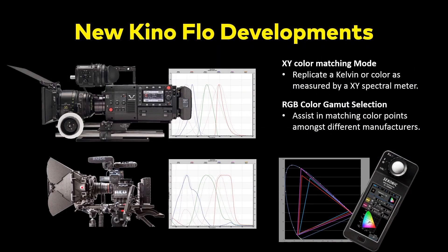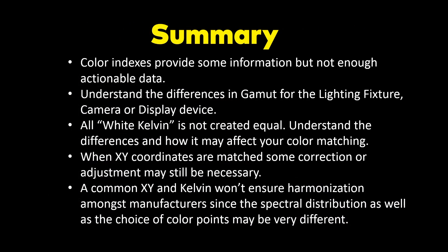Summarizing: XY color matching — I think it'll work. RGB is another way of blending colors, and if we all harmonize on gamut, that should work out. Color indexes provide some information, but not enough actionable data — that's really unfortunate. We need to understand these differences in gamut and how we want to work in post, because we now have the ability to actually set that in the instrument.